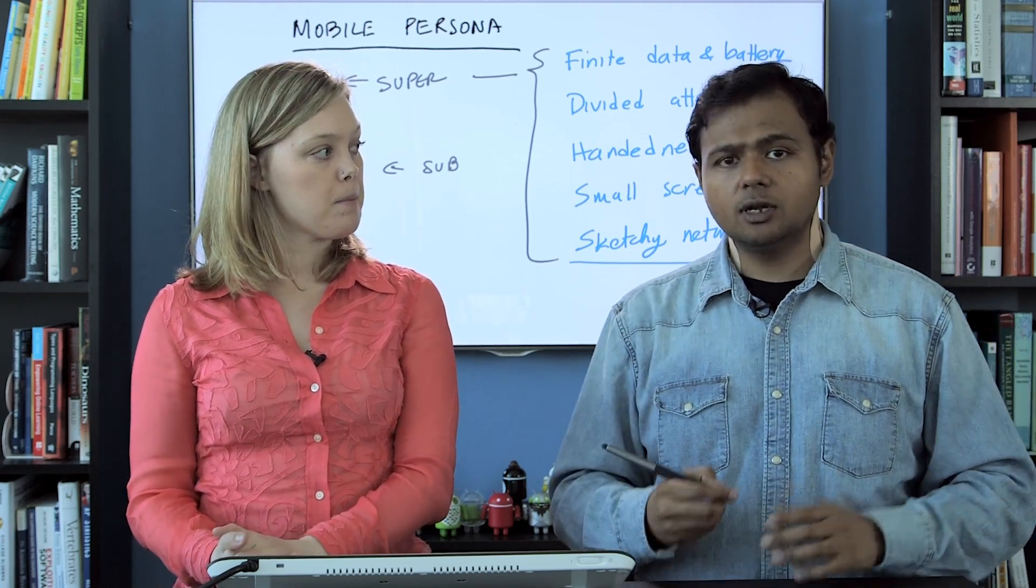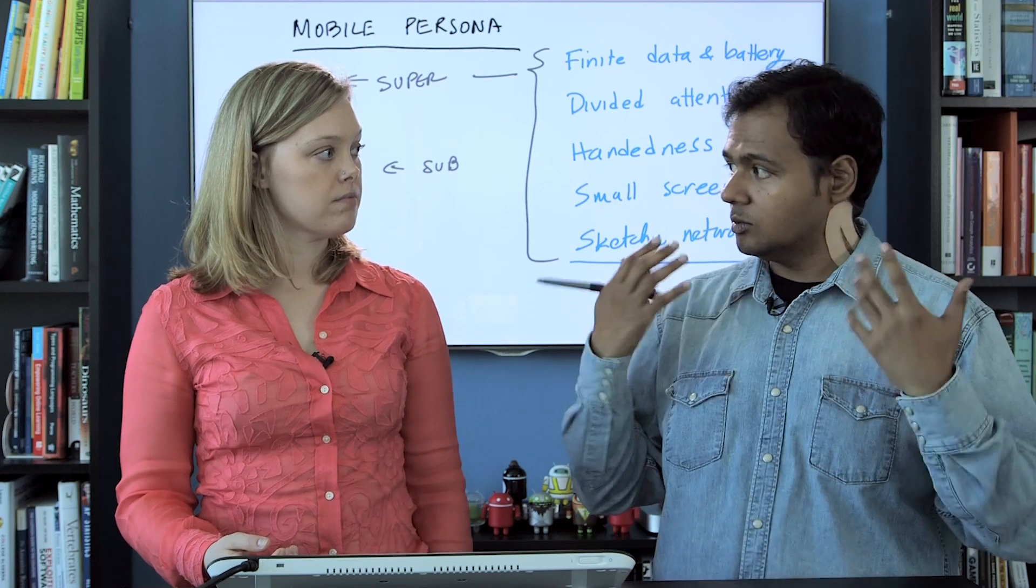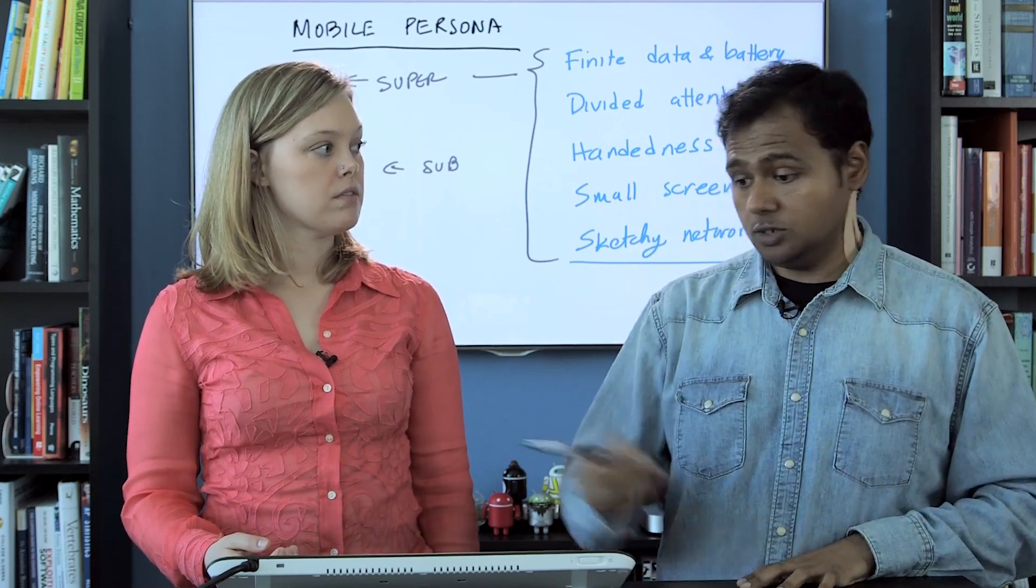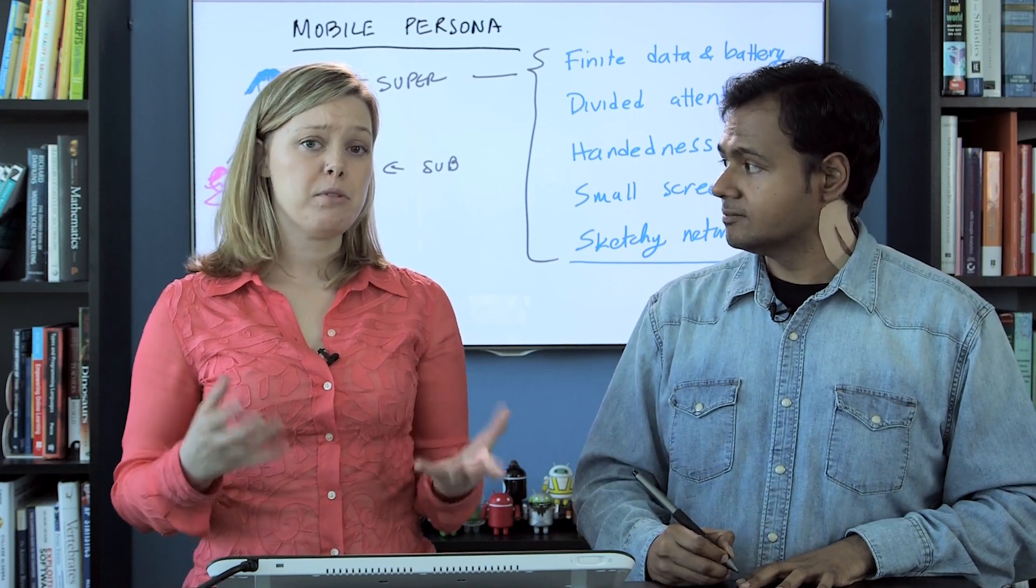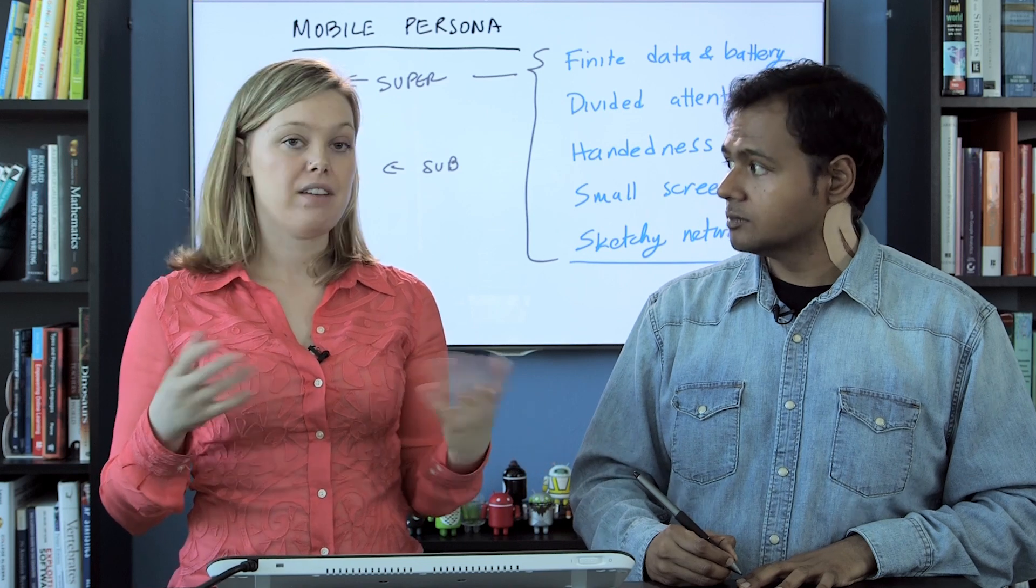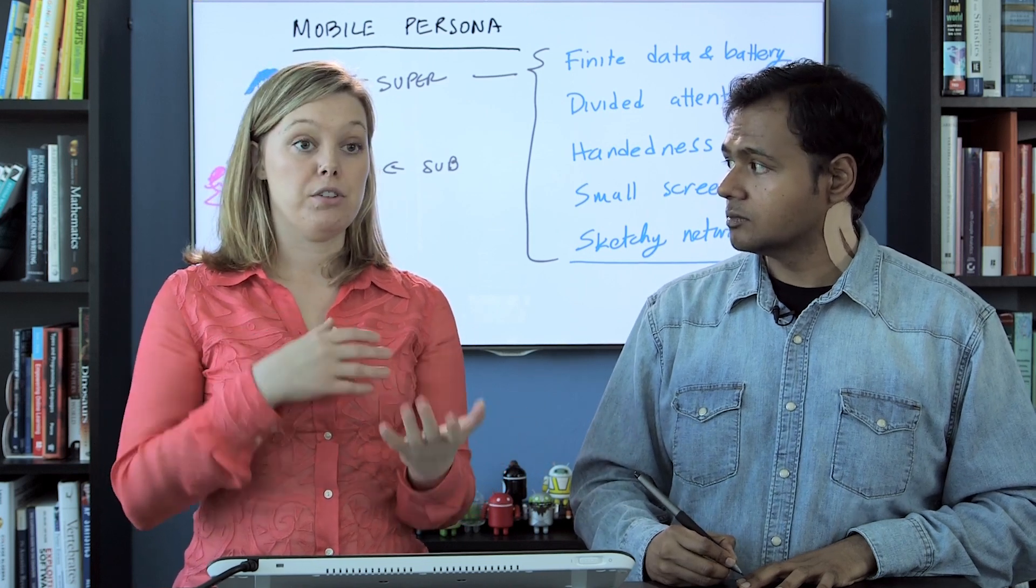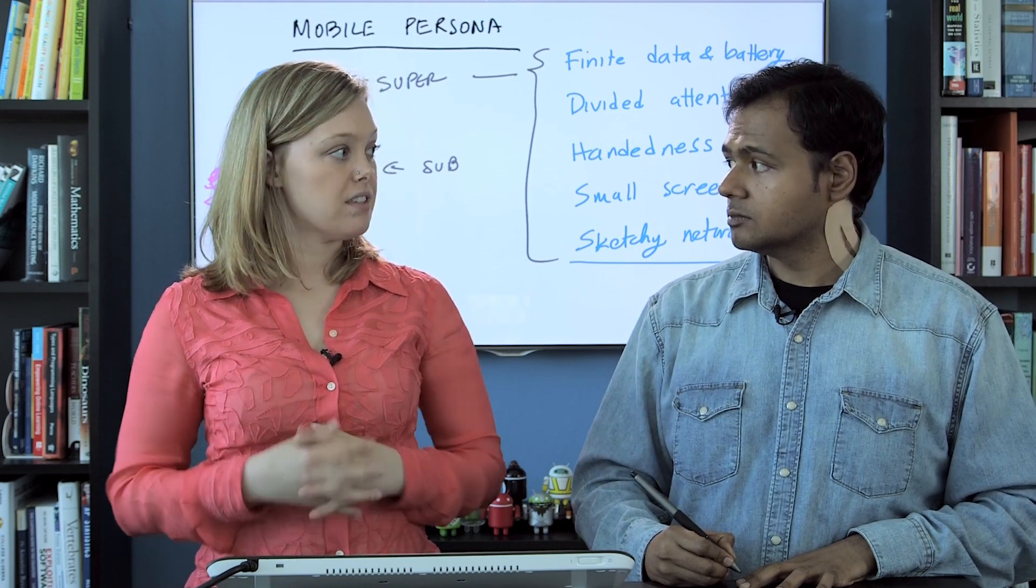Yeah, others are actually a result of our human form factors. Our hands only move in certain ways, our brains work in certain ways, which is why we have divided attention when we're moving around doing six things at once. And also, some of them have to do with what it means to be mobile, like when you're interacting within a physical environment. Your network can be sketchy because if you go inside of a building or you're inside of an elevator and things like that.